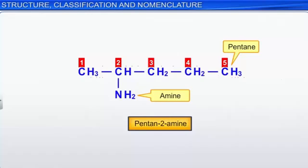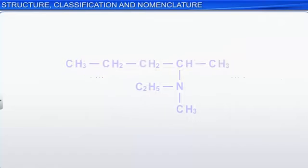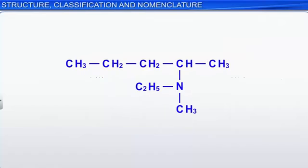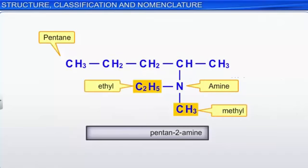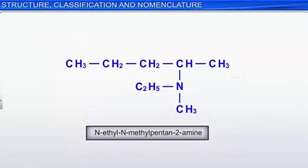Let us try to name the given compound. Here, the longest carbon chain has five carbon atoms and therefore the parent alkane is pentane. Since the nitrogen atom is attached to the second carbon atom, the amine is named pentan-2-amine. The side chains, the methyl and ethyl groups, are prefixed as N-ethyl-N-methyl in alphabetical order. Thus, the complete IUPAC name of this compound is N-ethyl-N-methyl pentan-2-amine.